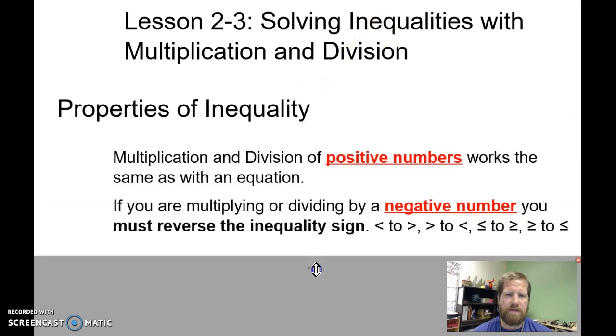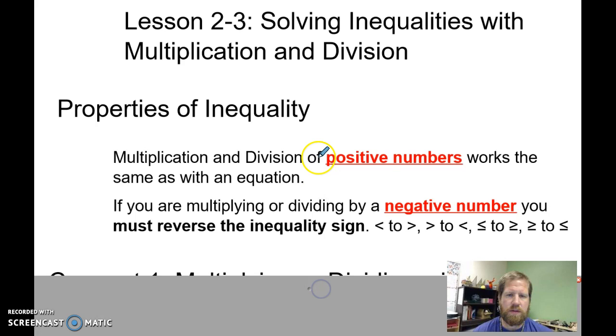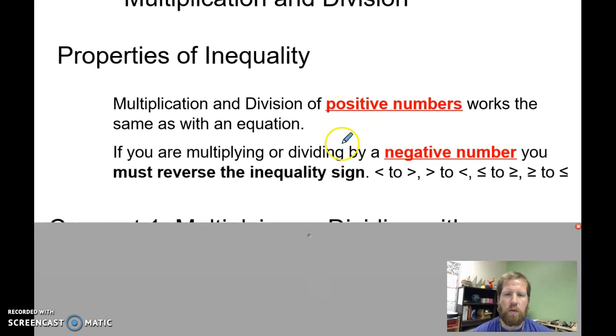The properties of inequality for multiplication and division with positive numbers work the same as with an equation. You use the inverse of the operation to undo it, and you're isolating the variable.